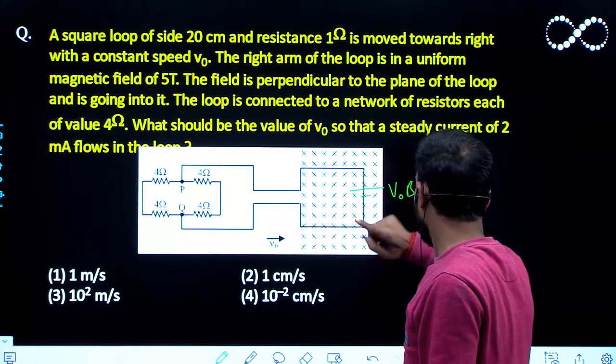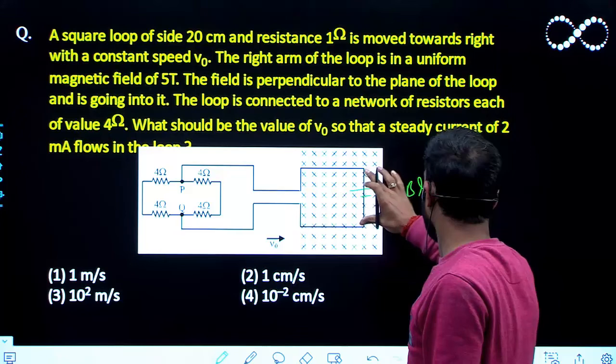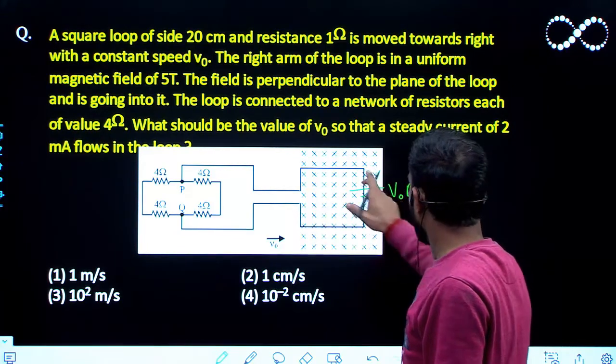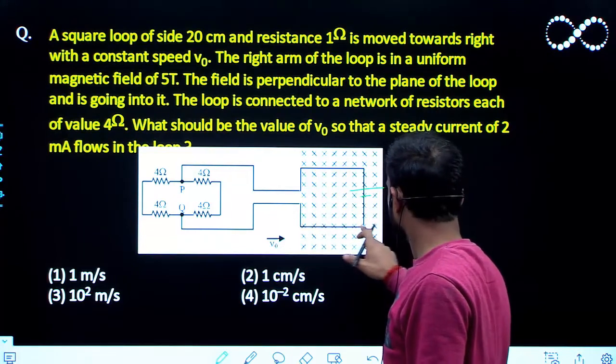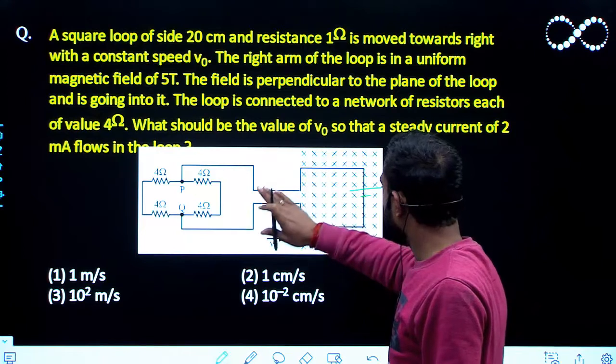This right arm, due to this arm the EMF will be induced motional EMF and the value of motional EMF will be V0 BL. Due to this arm no motional EMF, due to this arm also no motional EMF, and this left arm is out of the field.